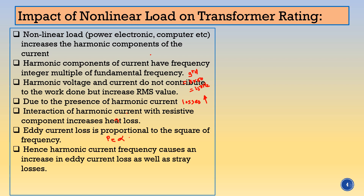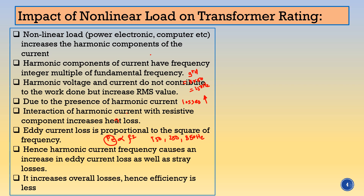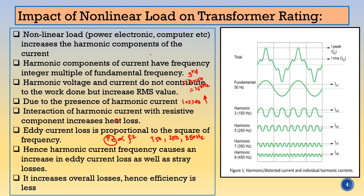If we denote eddy current loss as PE, then PE is proportional to frequency squared. The third harmonic has a frequency of 150 Hz, the fifth harmonic has 250 Hz, and the seventh harmonic has 350 Hz. As the frequency goes on increasing, the eddy current component loss also goes on increasing. Hence harmonic current causes increases in eddy current loss as well as stray losses, increasing the overall losses. Hence the efficiency of the transformer will decrease.